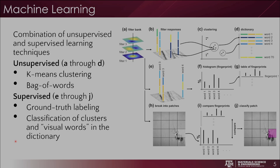To accomplish this goal, the authors use machine learning in a combination of unsupervised and supervised learning techniques. For this presentation, I will be focusing on the unsupervised techniques, but I will still go over the supervised techniques as they are important to the final results of the paper. For unsupervised learning, k-means clustering and bag of words techniques were used. For supervised learning, ground truth labeling and classification of the clusters and visual words from bag of words into a dictionary were used to match a fingerprint with a ground truth anomaly detection trained previously.